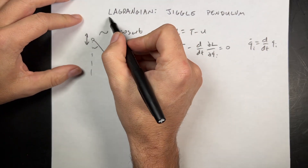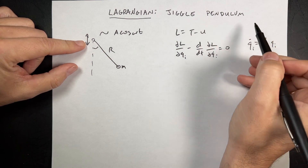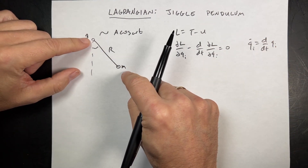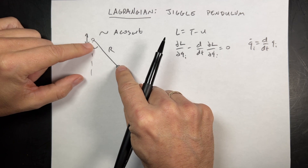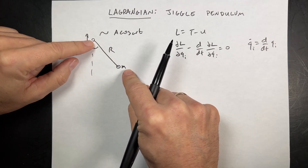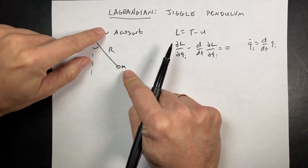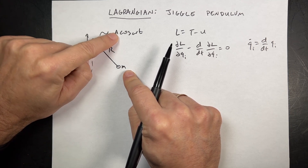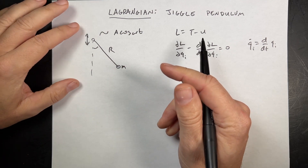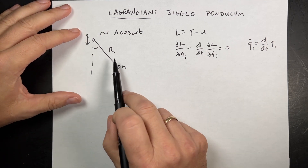It's time for another Lagrangian mechanics problem. This one I call the jiggle pendulum. The idea is that there is a mass on a string of length r, mass m, connected to a point — but the point is not stationary. This point oscillates up and down with a motion a cosine omega t, some amplitude. Let's go ahead and find the equation.